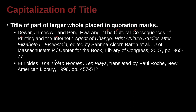Euripides, The Trojan Women: 10 Plays, translated by Paul Roche, New American Library. In this case, Euripides is the author — a classical book. The book's title is The Trojan Women: 10 Plays. There's a translator — Paul Roche — because it was not originally in English. New American Library are the publishers, and it came out in 1998.